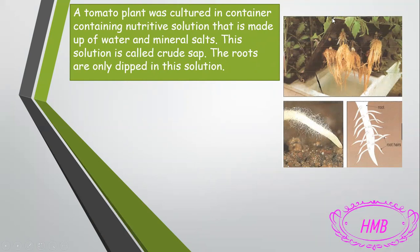The roots are only dipped in this solution, as you can see. If we close this cover, all of the roots will be dipped in the crude sap, without the stem, without the leaves — only the roots. In these two pictures, under a magnifier, we can see that roots are made up of hair-like structures called root hairs.